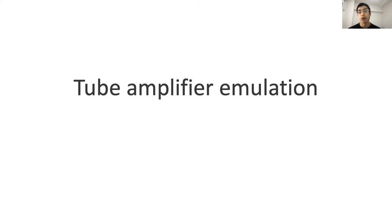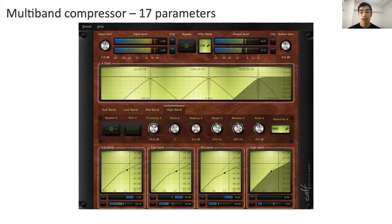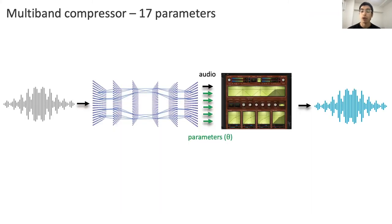The first task that we are going to explore is tube amplifier emulation. Emulation of non-linear effects or distortion effects is a highly researched field whose goal is to recreate the sound of an analog reference device, such as a tube amplifier. For this task, we are going to incorporate this multiband compressor into our network, and we will train our model to use 17 of its parameters.